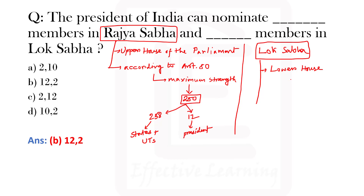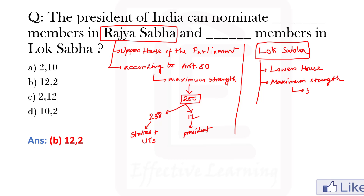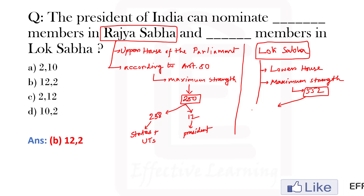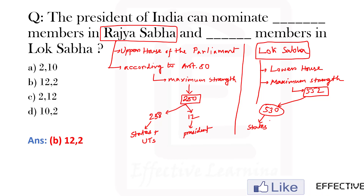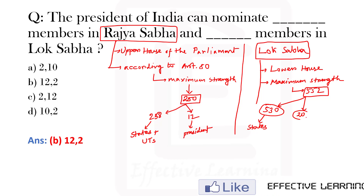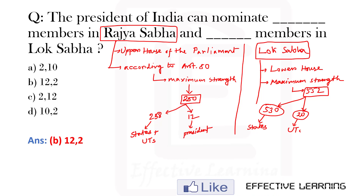The Lok Sabha is the lower house of the Parliament. The maximum strength of the Lok Sabha is 552. Out of these, 533 are from states and some seats are from union territories.